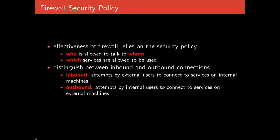The effectiveness of a firewall is based on its policy. The policy decides who is allowed to talk to whom and which services are allowed to be used — whether a machine can be talked to and which ports can be used. It also has a fundamental distinction between inbound and outbound connections. An inbound connection is an attempt by external users — anyone on the internet — to connect to services on internal machines, like accessing a web server. An outbound connection is an attempt by internal users, such as employees, to connect to services on external machines like google.com.